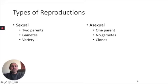This video is about types of reproduction. Generally in biology there are two different categories for reproduction: sexual reproduction and asexual reproduction. Asexual just means without sex, so the A just means without.